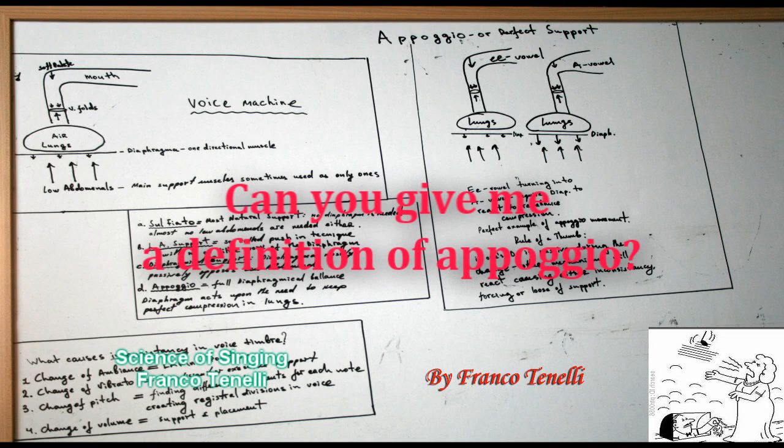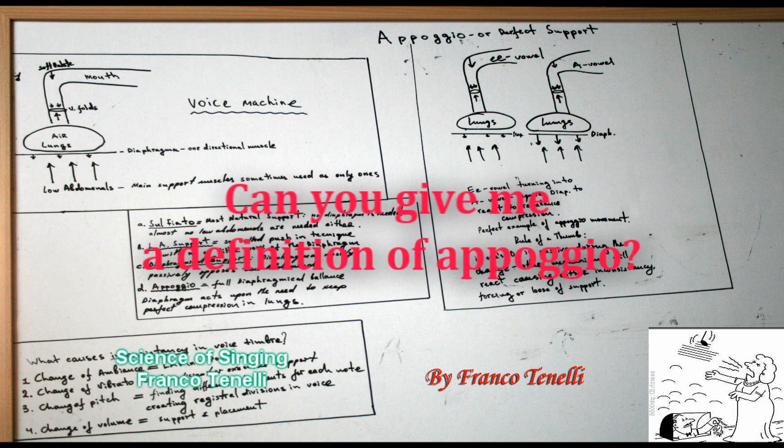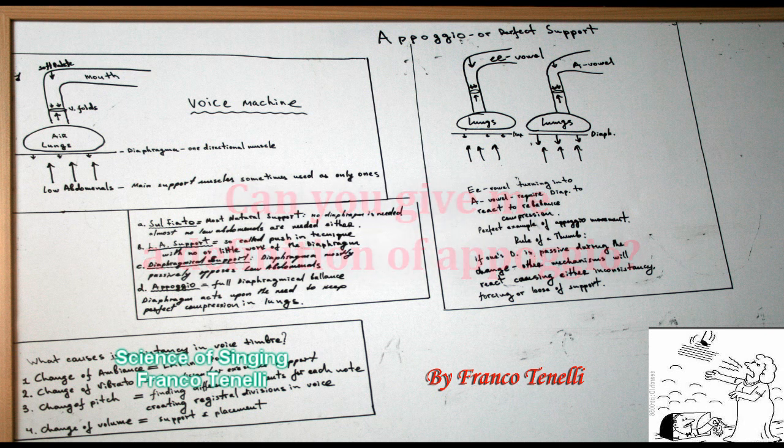Appoggio is a diaphragmical balanced way of vocal breathing, or support, that allows singing in one register without forcing one's voice.